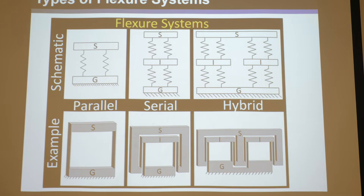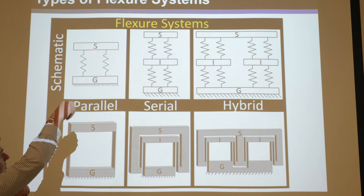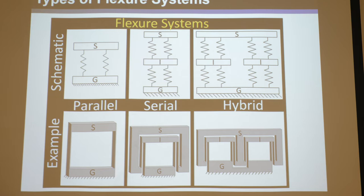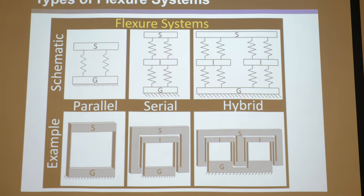There are three kinds of flexure systems classified according to how they're configured: parallel, serial, and hybrid. A parallel system consists of just two rigid bodies - a stage and a ground which is held fixed - connected directly together by parallel flexure elements. In schematics, bodies are depicted as rectangles and flexure elements as zigzag springs. In a parallel system, two bodies are directly connected by springs in a parallel fashion.